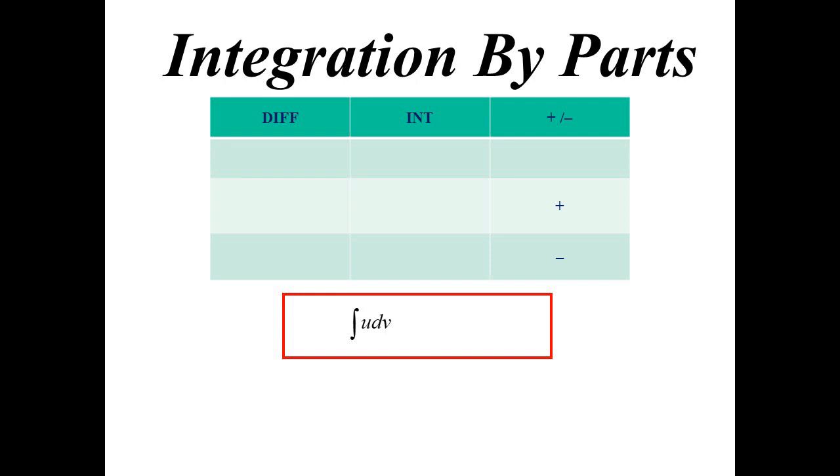So the idea is this. You have to integrate U times V. One of those things we know we have to differentiate. One of those things we have to integrate. So we write it down. U, V, differentiate, integrate. Then you do exactly what the column's saying. If I integrate V, I get V. And there's the tic-tac-toe.